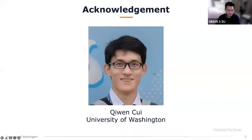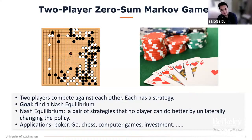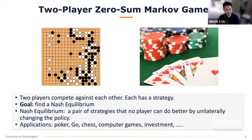This is joint work with my student Xivin Cui. Today we're going to talk about two-player zero-sum Markov games. Because this is a multi-agent reinforcement learning workshop, I don't think I need to motivate this problem. Basically, this problem is about two players competing against each other, each with a strategy, and our goal is to find a Nash equilibrium — a pair of strategies where no player can do better by unilaterally changing their policy. There are many applications like poker, Go, and chess.